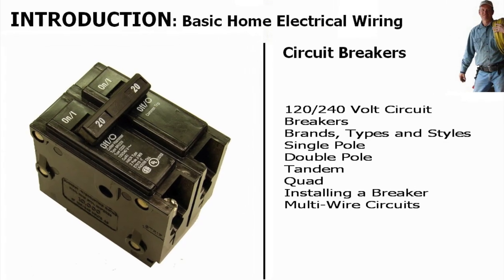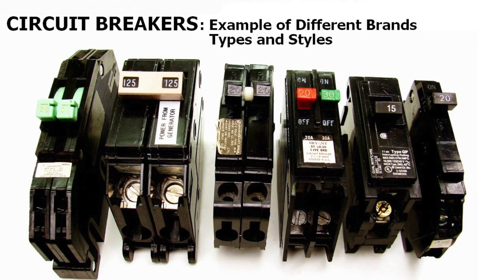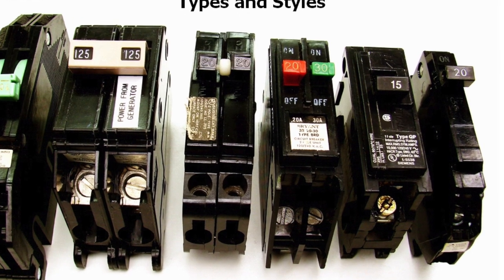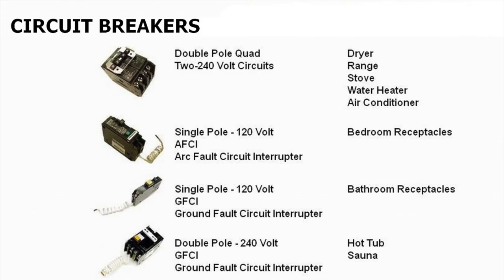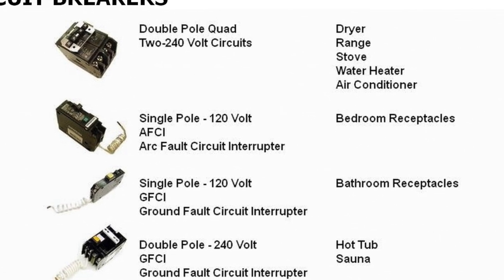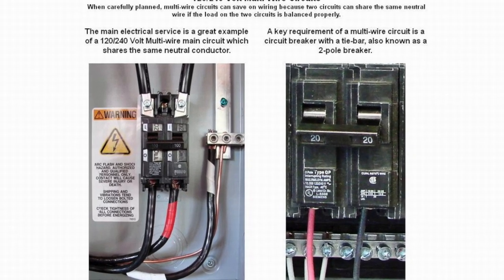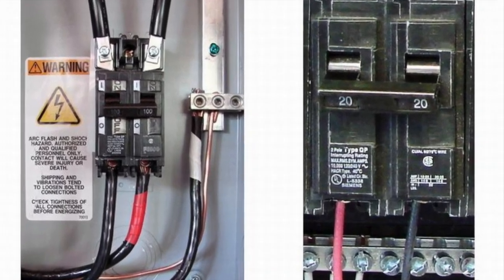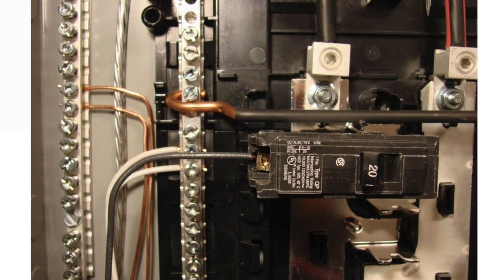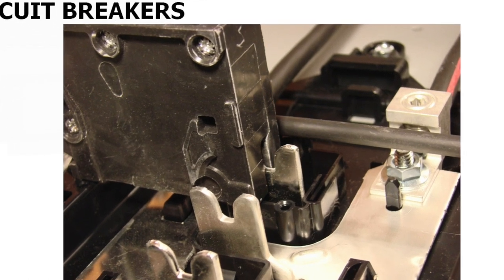Then we get into circuit breakers — 120-volt and 240-volt circuits, the different brands, types and styles: single pole, double pole, tandem, and quad. We cover installing a circuit breaker, multi-wire circuits and how those are configured, and we stress that different brands of circuit breakers are not all alike and not all are interchangeable within a panel.